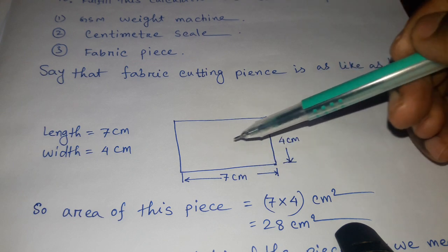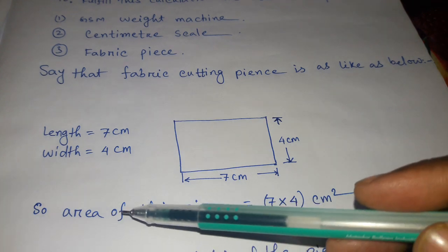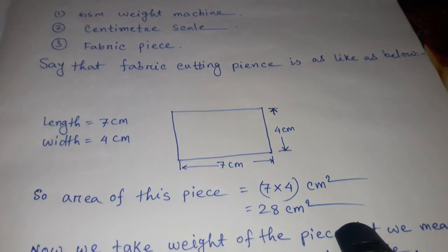So the area of this fabric piece is 7 × 4 = 28 centimeters squared.